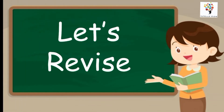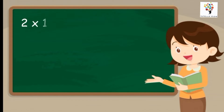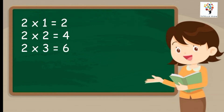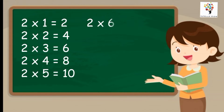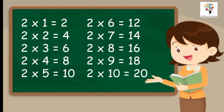Let's revise. Two ones are two. Two twos are four. Two threes are six. Two fours are eight. Two fives are ten. Two sixes are twelve. Two sevens are fourteen. Two eights are sixteen. Two nines are eighteen. Two tens are twenty.